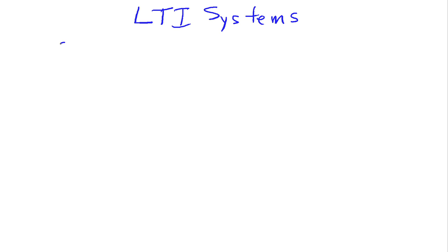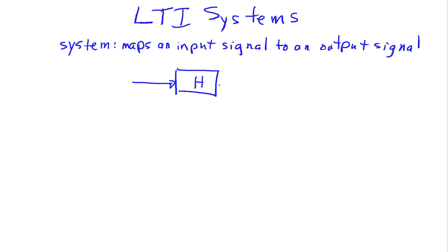Beginning with a system, that can be defined as a device that maps an input signal to an output signal. Schematically, we would draw something like this, where the box represents the system, we'll call that H.